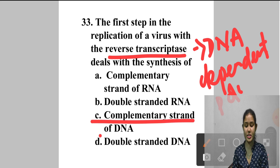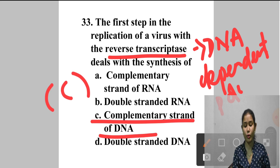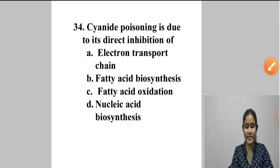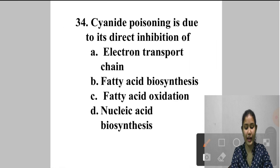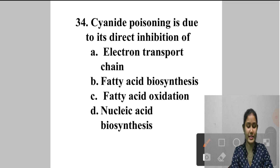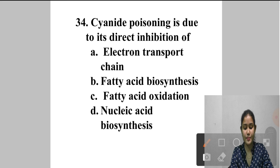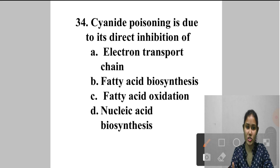Question 34: Cyanide poisoning is due to its direct inhibition of — A. Electron transport chain, B. Fatty acid biosynthesis, C. Fatty acid oxidation, D. Nucleic acid biosynthesis. Cyanide poisoning is due to direct inhibition of the electron transport chain. Answer is option A.